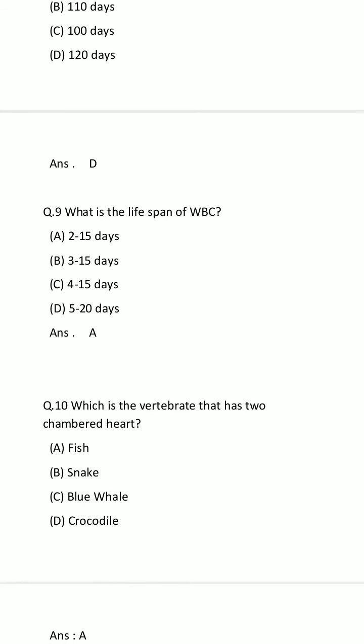Question number 9: What is the lifespan of WBC, which is white blood cells? Option A: 2 to 15 days. Option B: 3 to 15 days. Option C: 4 to 15 days. Option D: 5 to 20 days. Your timeline starts now. The time is finished. The answer is Option A: 2 to 15 days.